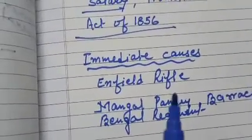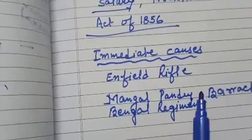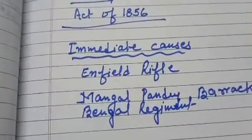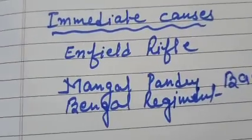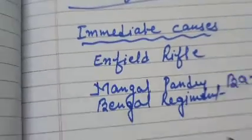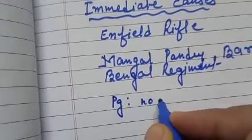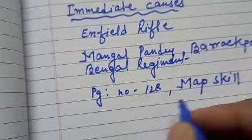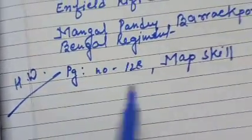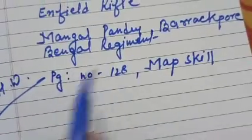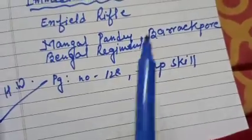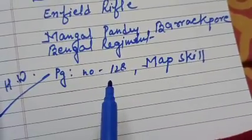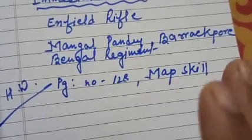In our next class, we will read about the course of the revolt. Your today's homework is map pointing on page number 128 — locate the main centers of the revolt on the Indian map. If you don't have an Indian map, you can draw it. Submit this map pointing on our WhatsApp group. That's all for today. Goodbye.